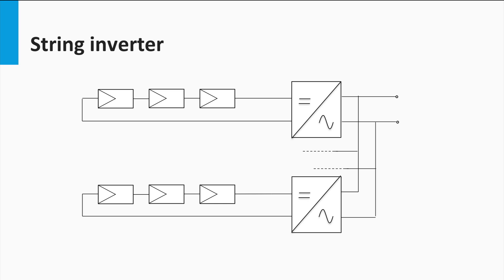Then we have the string inverter concept, which seeks to strike a balance between the module-level inverter and the central inverter topologies. The string-inverter topology is more resilient to mismatch than the central inverter, because each string is independently operated at its maximum power point, guaranteeing a higher energy yield. String inverters are smaller than central inverters. However, the implementation is more complex than the module inverter. Also, partial shading will have a greater influence over the string-inverter topology than over the micro-inverter topology.